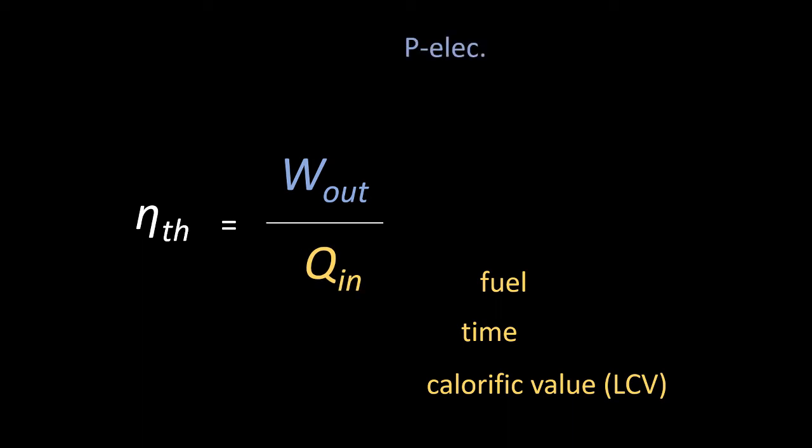If we measure the electrical power output of the generator using the known efficiency of this generator and estimating some other losses we can work backwards to infer the mechanical work output of the engine. These two numbers together give us efficiency.